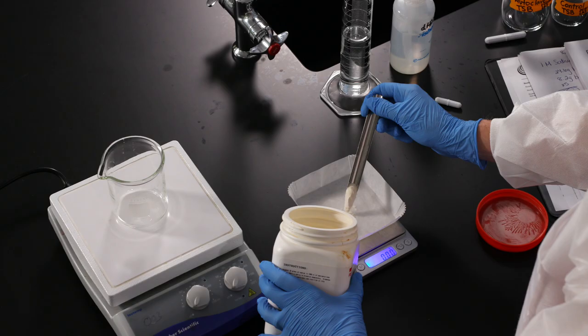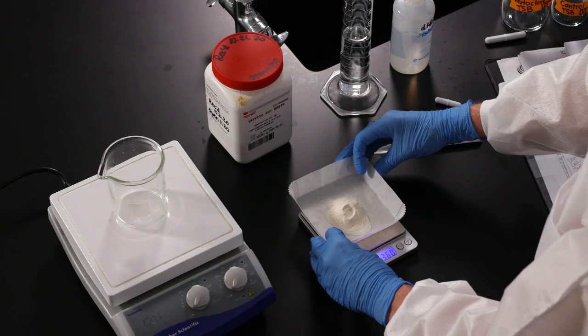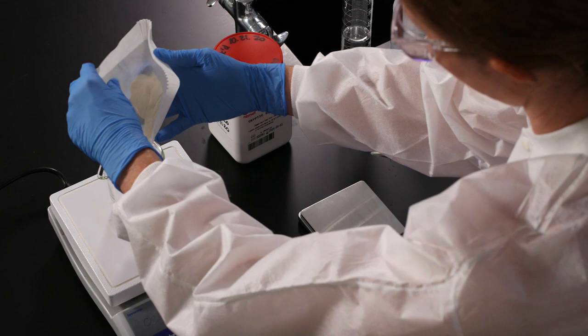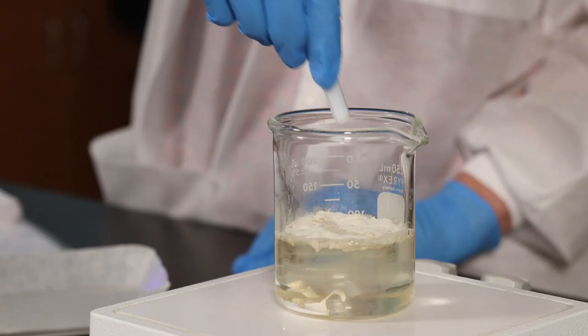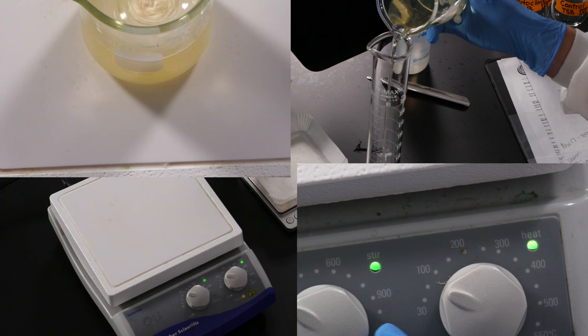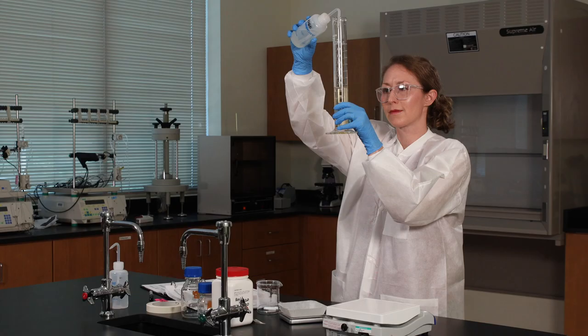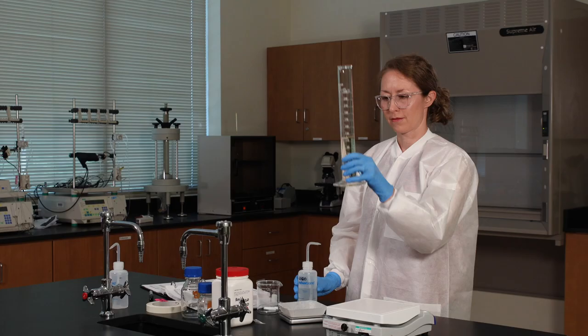Let's make the media. Weigh out 3.6 grams of soy broth powder. Then transfer the powder to a 150 ml beaker. Add about 100 ml of water and use the magnetic stir bar to dissolve the powder. You can also use the heating element on the stir plate to help the mixture dissolve faster. Pour the mixture into a 200 ml graduated cylinder and add water to bring it to a final volume of 120 ml.